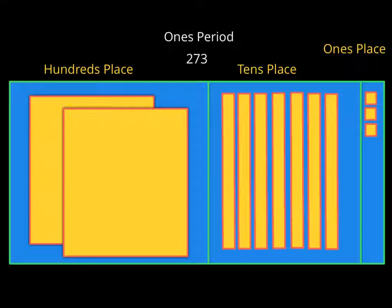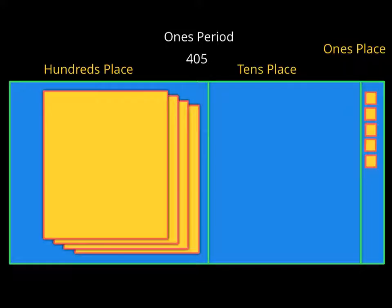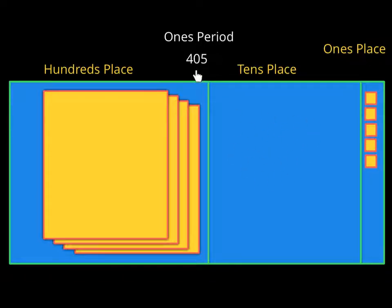Next problem: the number 405. There it is in standard form — place the blocks. I've got four 100 blocks for the 400. Notice I don't have any blocks in the tens place, because there's no tens. So no blocks there, and I have five ones.